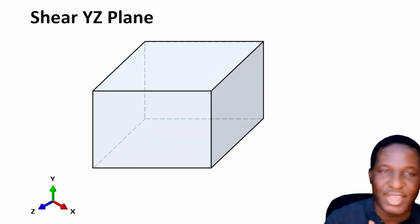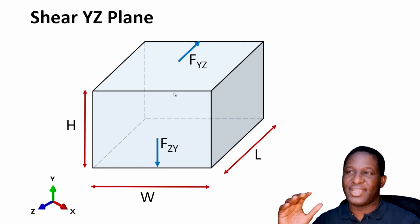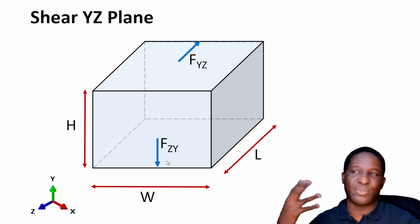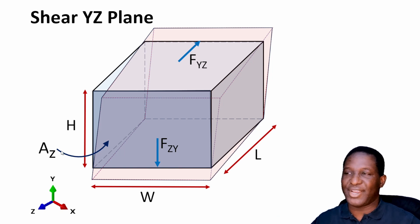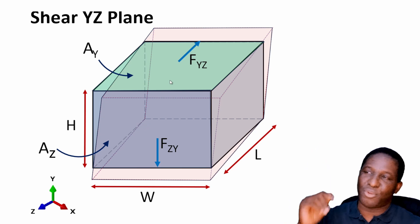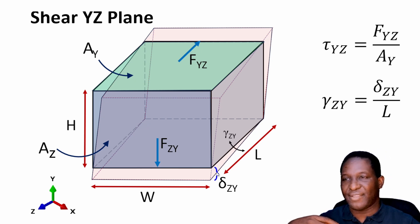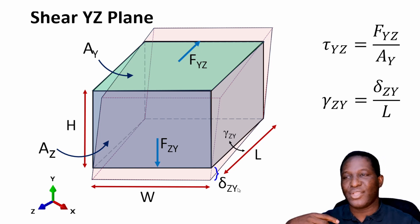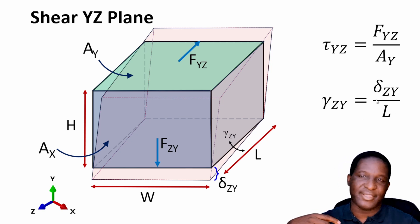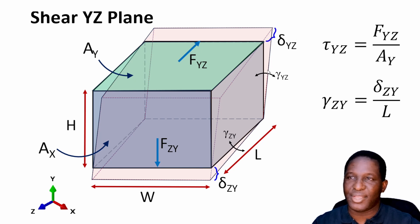For the YZ plane, we again have our representative volume element with its dimensions. We are shearing in one direction and the other, so the two planes being sheared are the YZ and ZY planes. The deformation profile takes a corresponding form. We isolate the cross-sectional area A on the Z plane — force divided by that — and also identify the A on the Y plane, force divided by that, to give the shear stress. The shear strain is obtained from the deformation divided by the length, as tan(theta) = delta_ZY / L, and similarly delta divided by H.